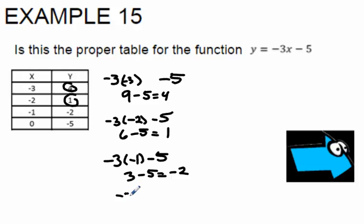Finally, it's going to be negative 3 times 0, the last x-coordinate, minus 5. Well, anything times 0 is 0. 0 take away 5 is negative 5. So every x-coordinate satisfies and makes the proper y-coordinate.